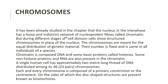During interphase, the chromosomes appear as a loose and indistinct network of protein fibers — nucleoprotein fibers — and we call these fibers chromatin. But in the different stages of cell division, the cell shows structured chromosomes, and there is equal distribution of genetic material.